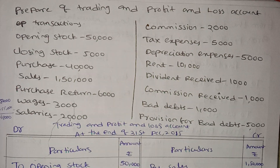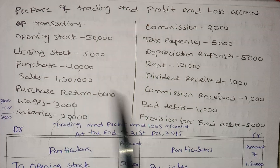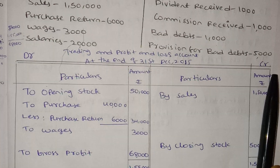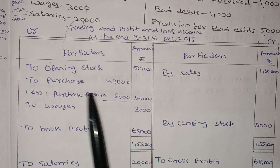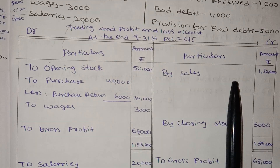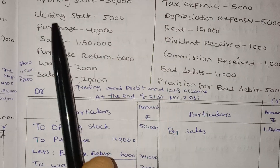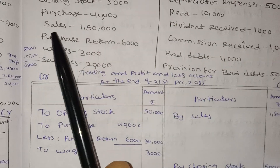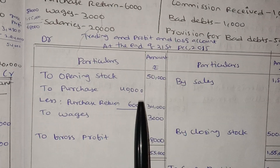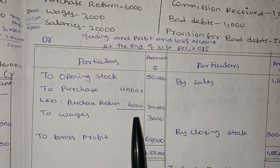We are asking about gross profit and gross loss, net profit and net loss. Opening stock — debit and credit. Two opening stocks: opening stock 1 and opening stock 2. Buy sales minus sales return — here we have sales return. Opening stock is $50,000. Purchase return is $6,000 and $34,000.